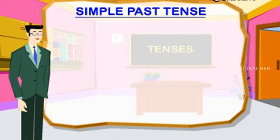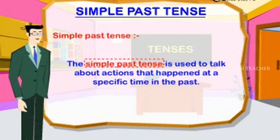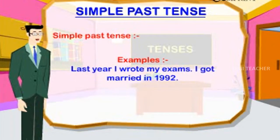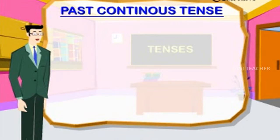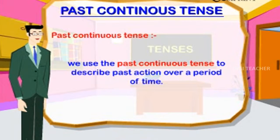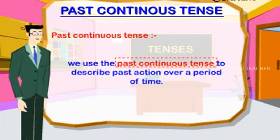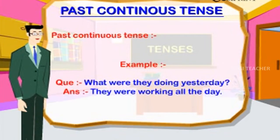Simple Past Tense: used to talk about actions that happened at a specific time in the past. Examples: 'Last year I wrote my exams.' 'I got married in 1992.' Past Continuous Tense: used to describe past action over a period of time. Example: 'What were they doing yesterday?' — 'They were working all day.'